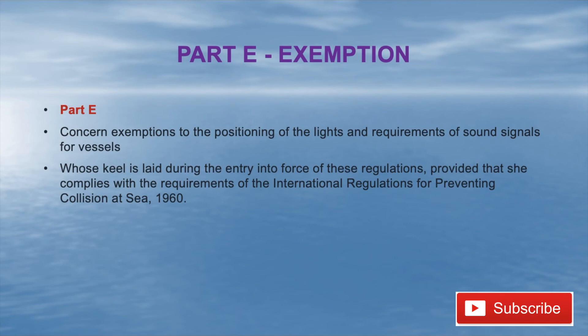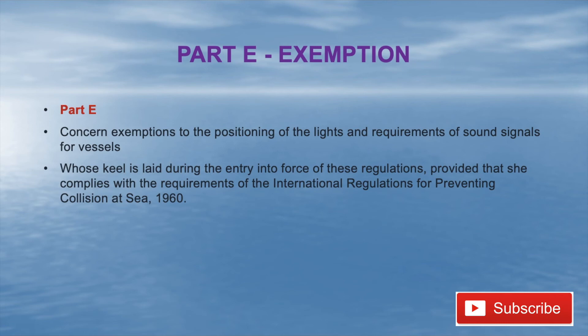Part E concerns Exemptions — exemptions to the positioning of lights and the requirements of sound signal appliances for vessels. It gives information about the position of lights and sound signal requirements for vessels whose keel was laid during the entry into force of this regulation, provided that the vessel complies with the requirements of the International Regulations for Preventing Collisions at Sea 1960.